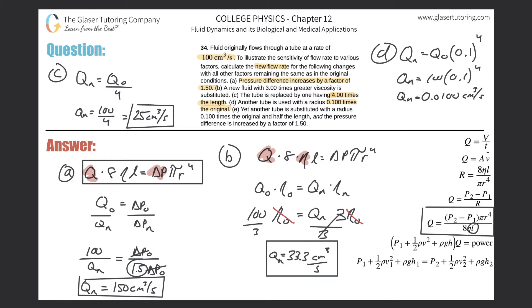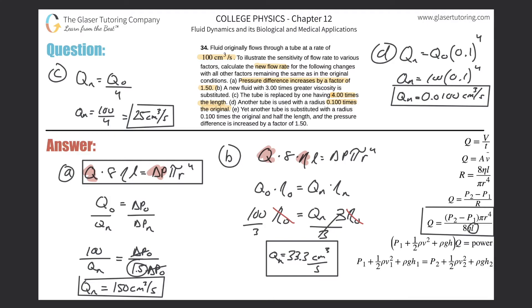Notice how sensitive the new flow rate is to changes in the radius of a tube. Hence why plaque buildup inside of arteries is very dangerous — small changes in the radius, in the cross-section of the artery, lead to large changes in the flow rate because it's raised to the fourth power. So eat healthy everyone, and exercise.